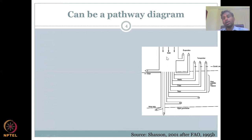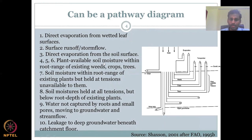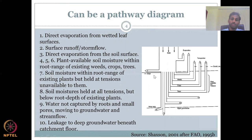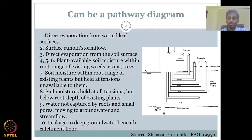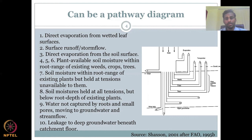The first process in the diagram is direct evaporation from a wetted leaf surface. When rain happens, the first thing it touches before reaching the ground is plant or tree leaves, and there is evaporation — not transpiration. The leaf is warmer and there is active sunlight, so when water hits the leaf, it evaporates. This direct evaporation from a wetted leaf surface is the first interaction, because rain meets the canopy first. Whatever rain remains then comes down. Sometimes this wetted leaf evaporation can be tremendous, so we have to account for it.